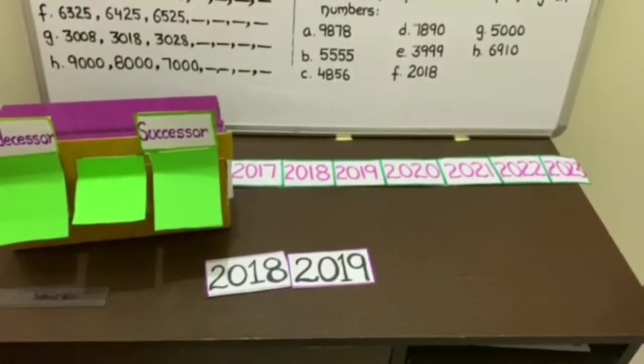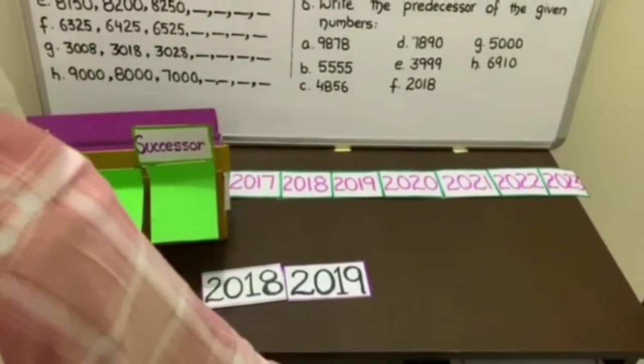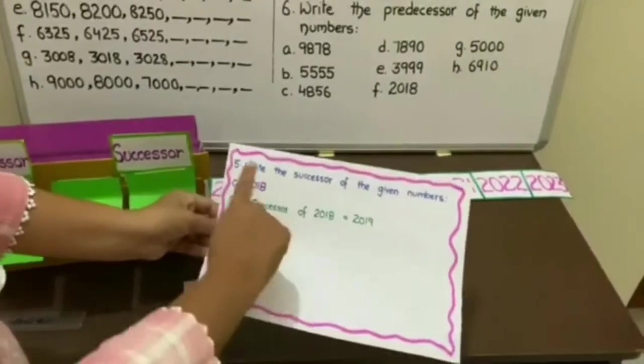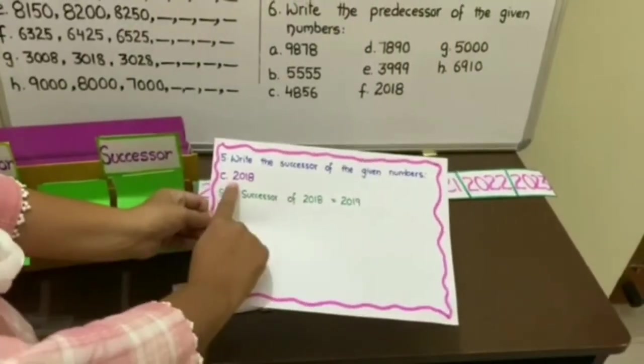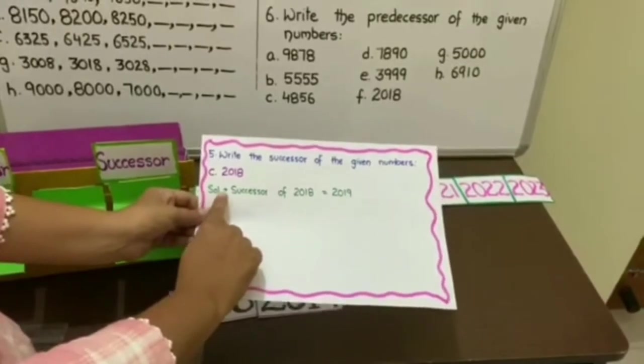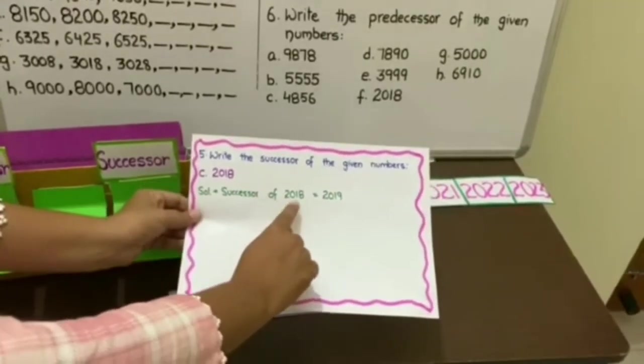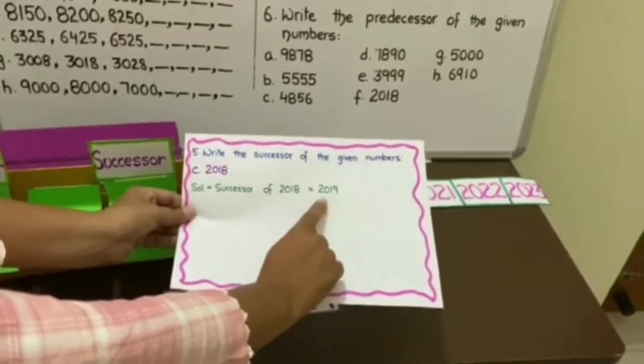To write this in your notebooks, copy the question, then part you are answering and in solution, write successor of 2018 equals to 2019.